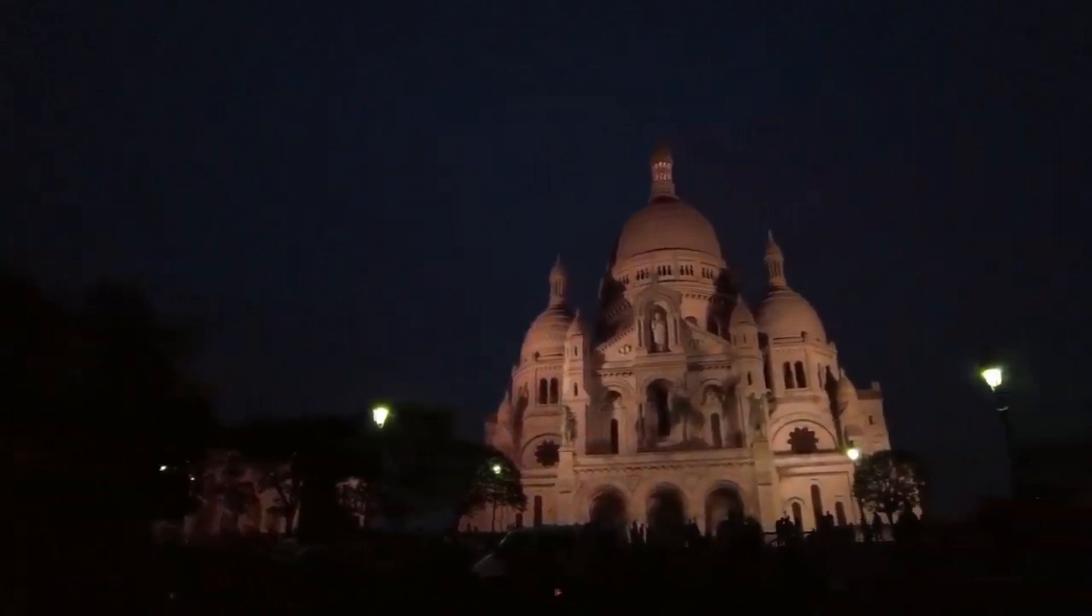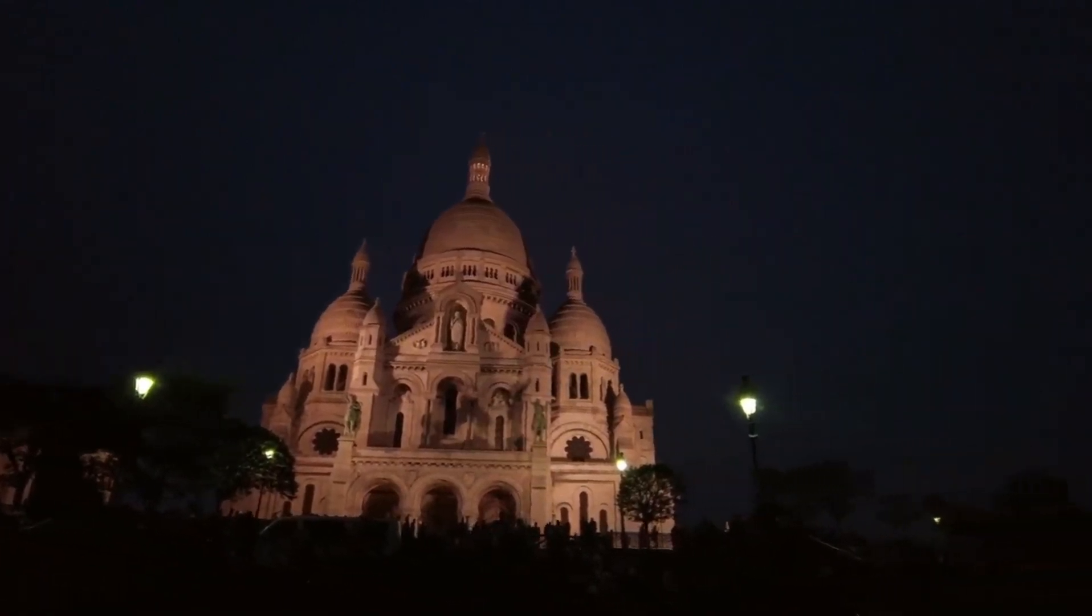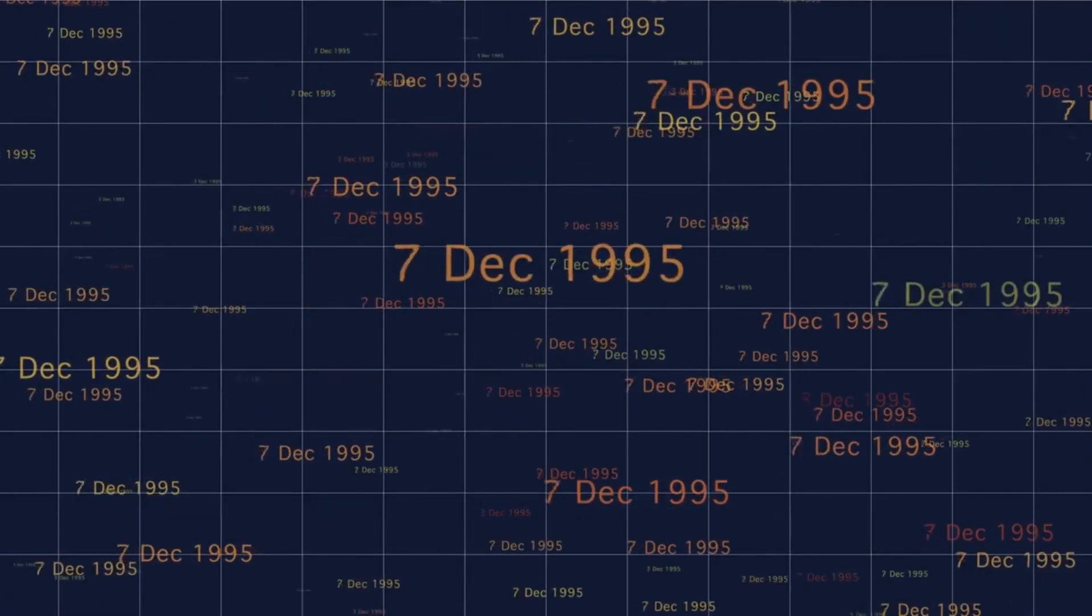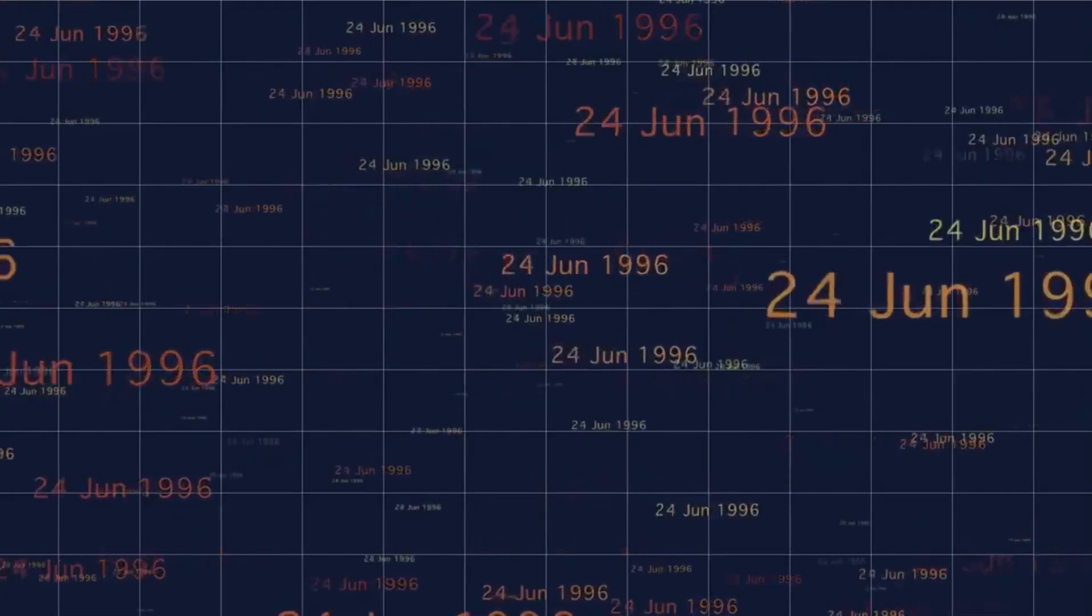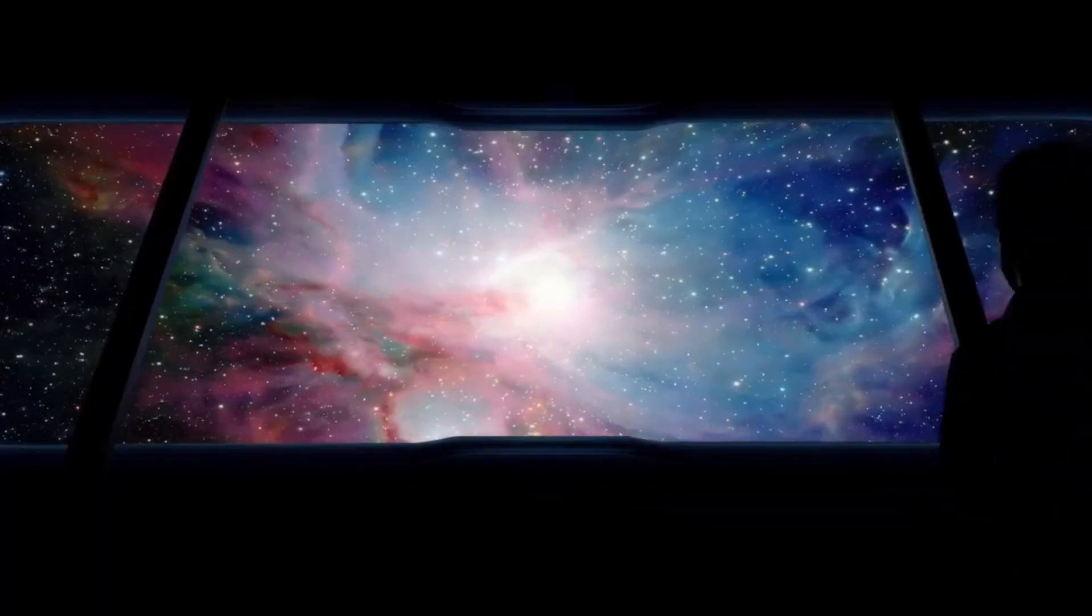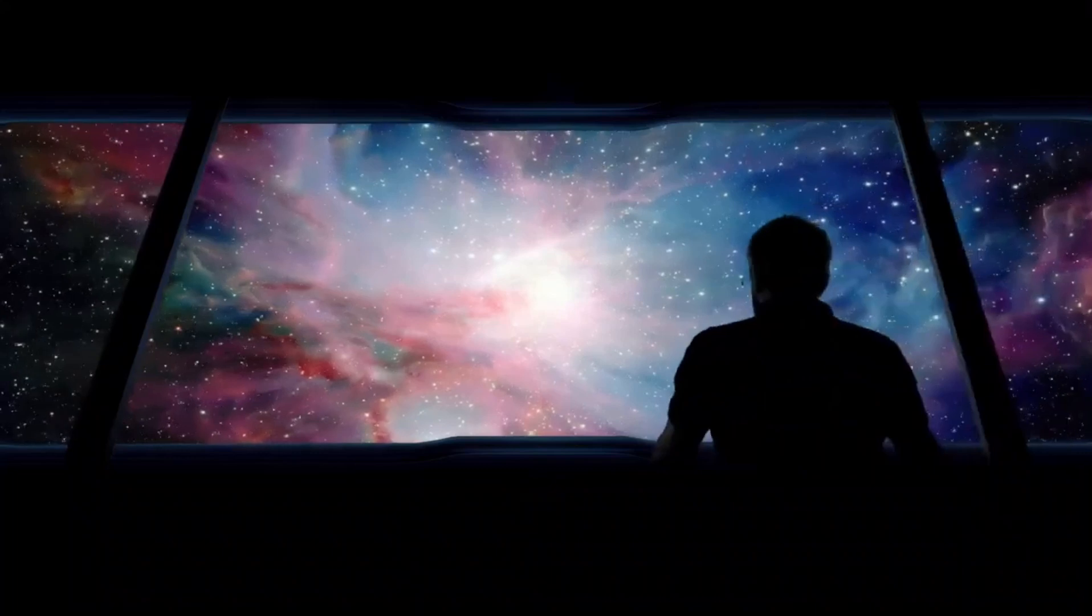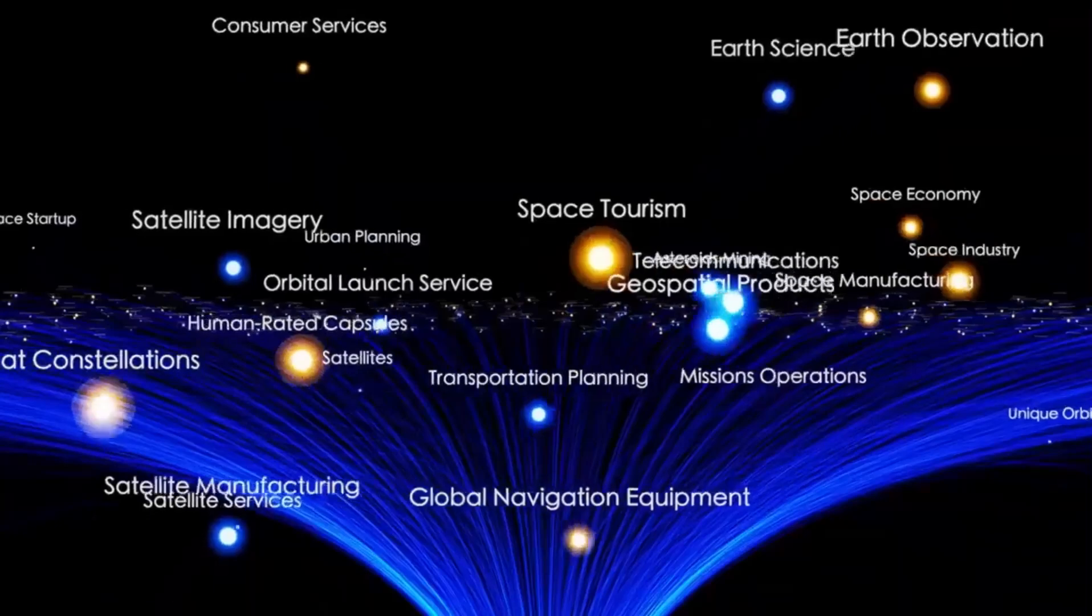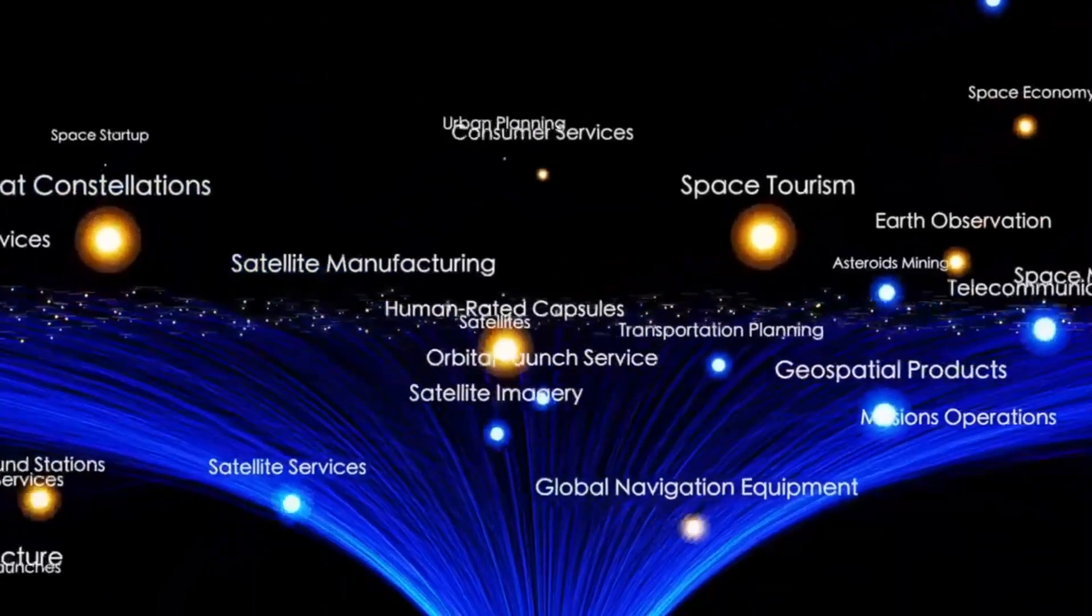For now, Betelgeuse remains a source of fascination and mystery. Its recent fluctuations in brightness have provided scientists with a unique opportunity to study the final stages of a massive star's life in unprecedented detail. By observing Betelgeuse, astronomers hope to gain a better understanding of the processes that lead to supernovae and the role these explosions play in the evolution of galaxies. The star's behavior also serves as a reminder of the dynamic and ever-changing nature of the universe, where even the brightest and most familiar objects can surprise us.